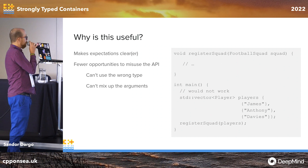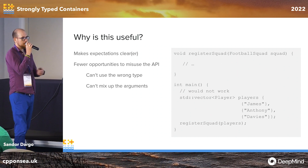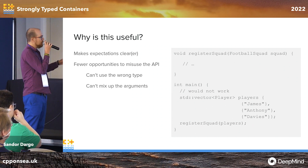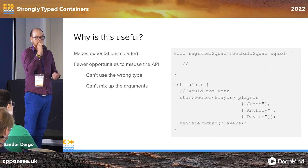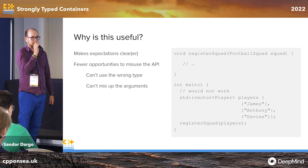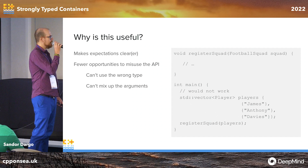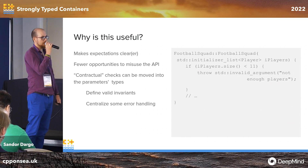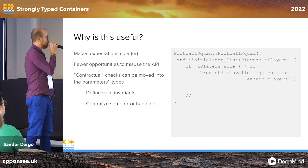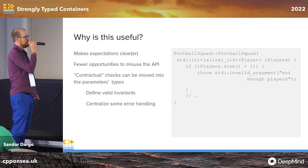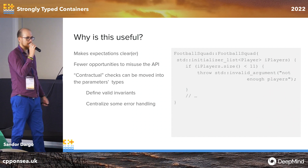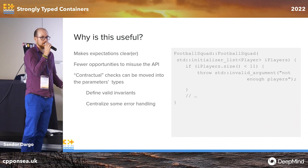We also have fewer opportunities to misuse the API because you can't use the wrong type. As we saw in the constructor, if we have multiple similar parameters — multiple numbers, multiple booleans — we cannot mix up arguments because everything has its own type. We could also move contractual checks directly into the types, defining what is valid or invalid, and even centralize some error handling into those strong types.